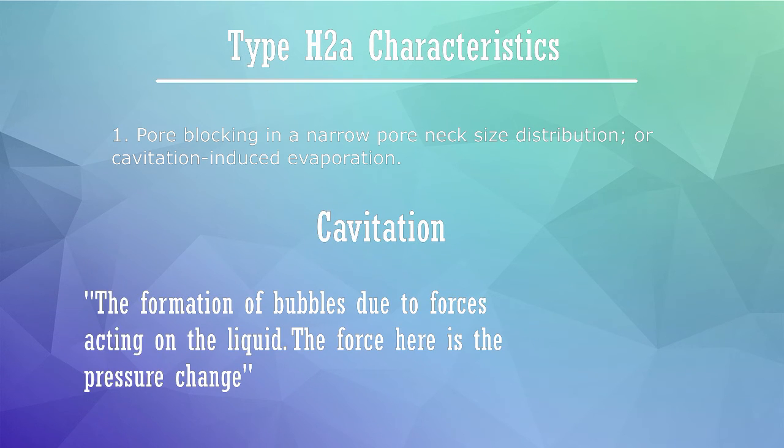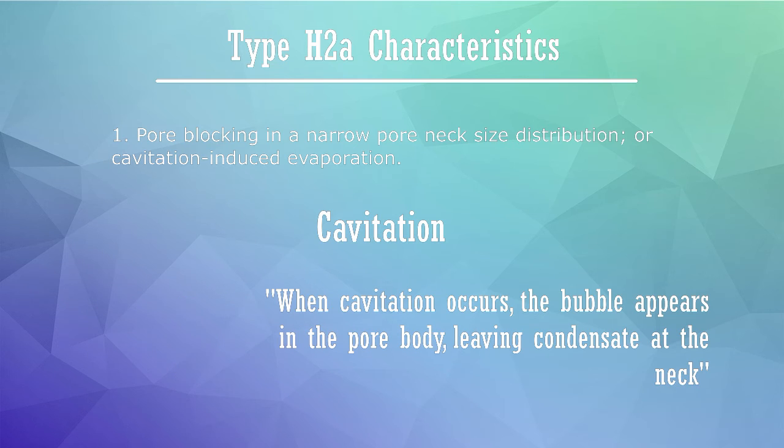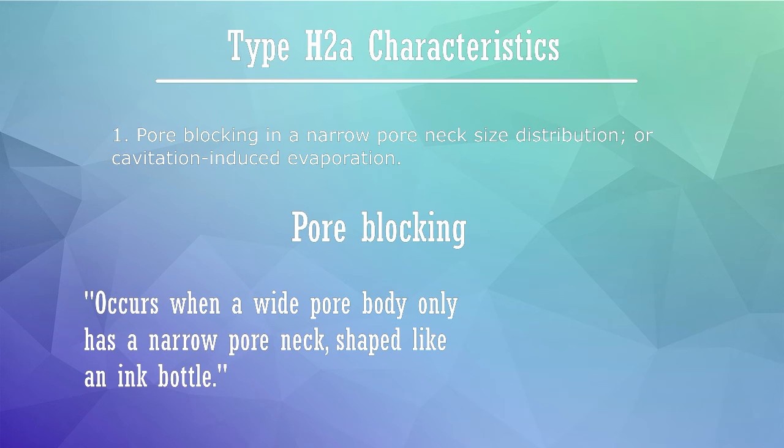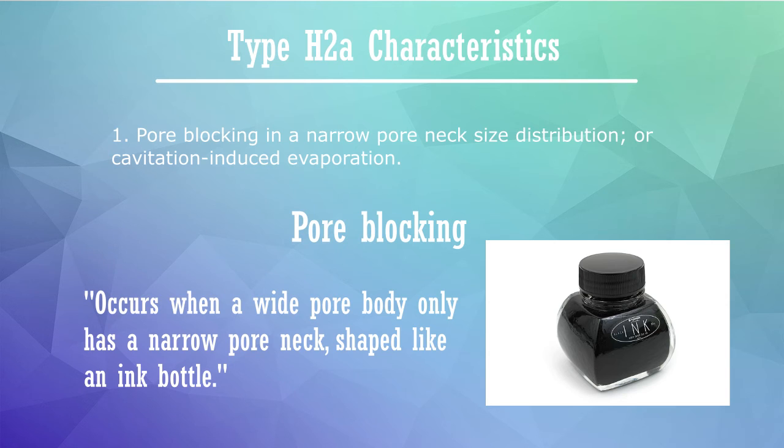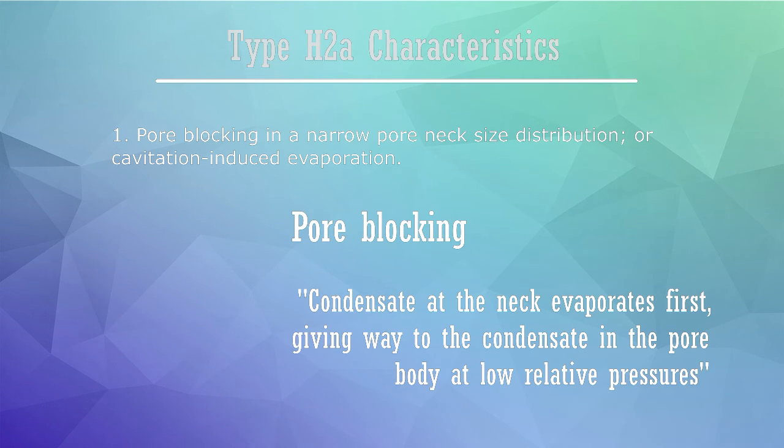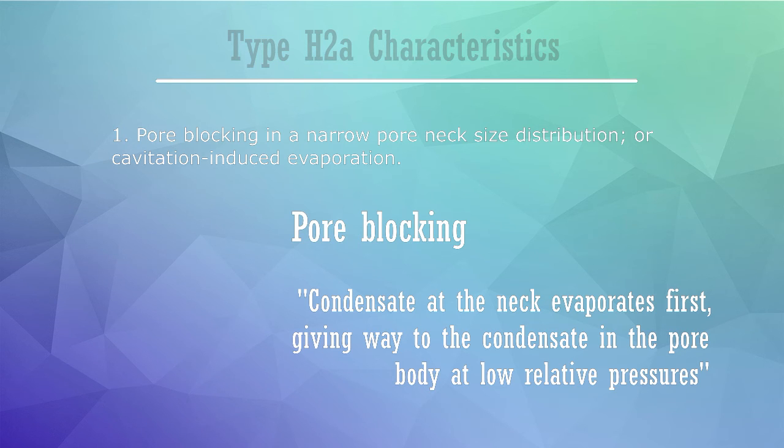Cavitation is the formation of bubbles due to forces acting on the liquid. In this case, the force is changes in pressure. When cavitation occurs, the bubble appears in the body of the pore, thus leaving condensate at the neck of the pore. Pore blocking is the opposite. It occurs when a wide pore body only has access to the outer surface through a narrow neck, a structure also known as an ink bottle pore shape. When the ink bottle is filled with a condensate which then evaporates, the condensate at the neck evaporates first, leaving the pore body filled until the condensate at the neck empties at a low relative pressure.